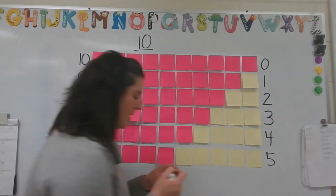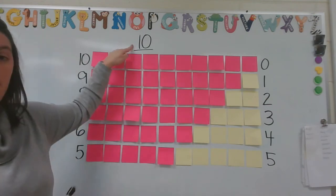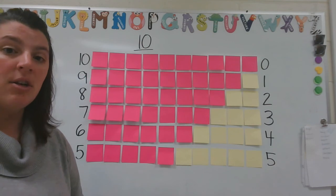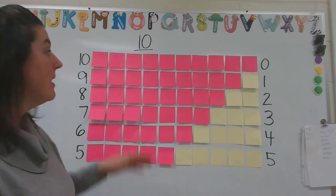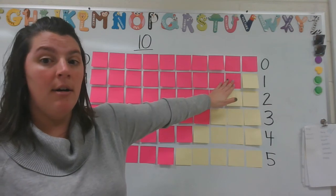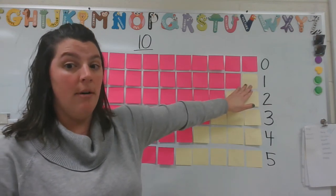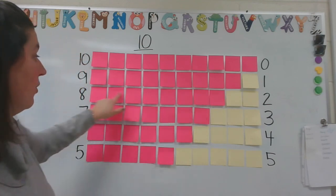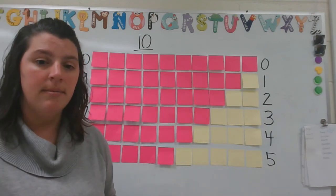These are all combinations to make the number 10. But when we line them up this way, we can start to notice patterns and see when this group gets bigger, this group is smaller. As this group gets bigger or has more, this group is getting smaller.